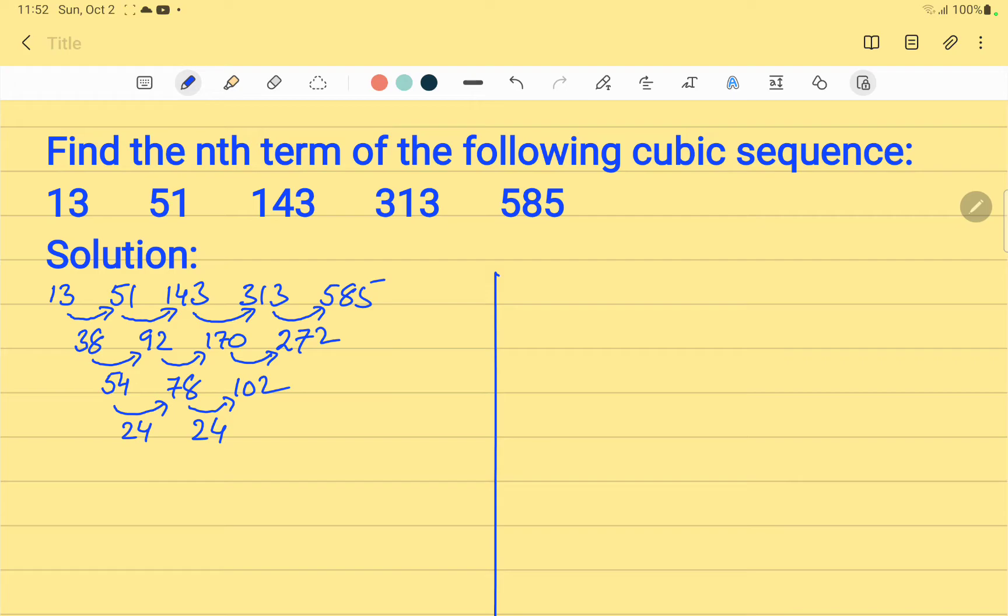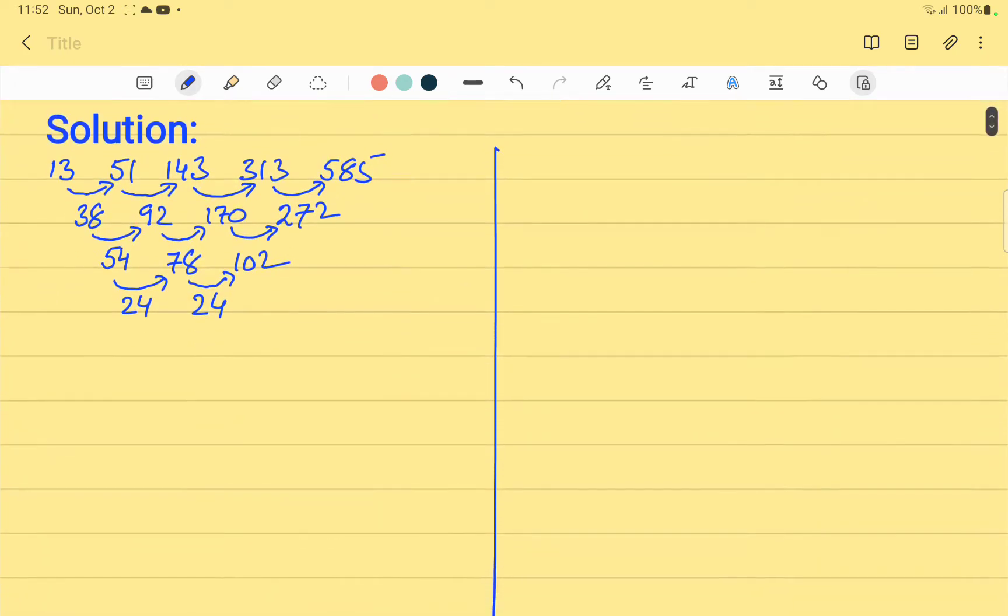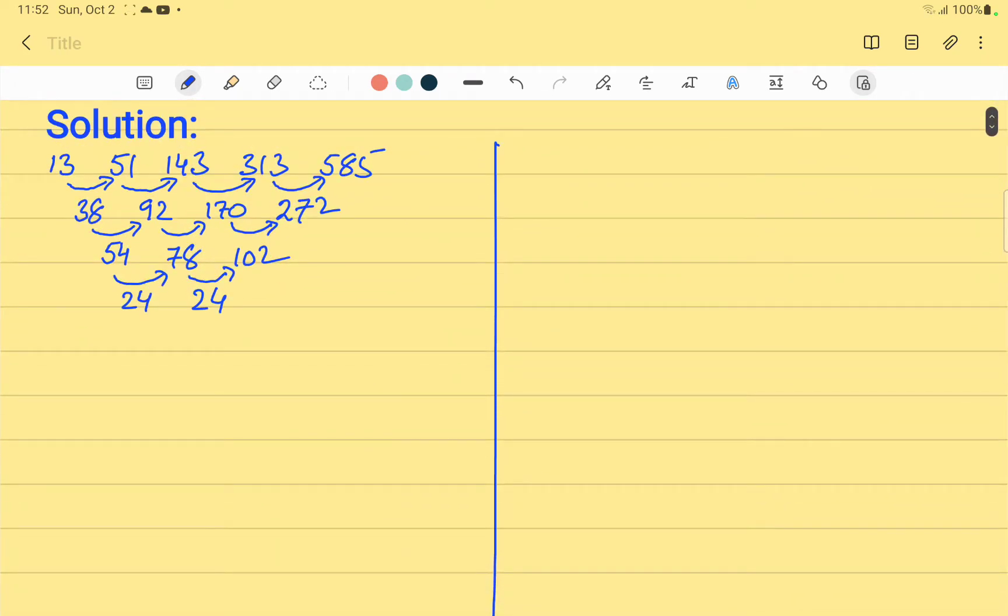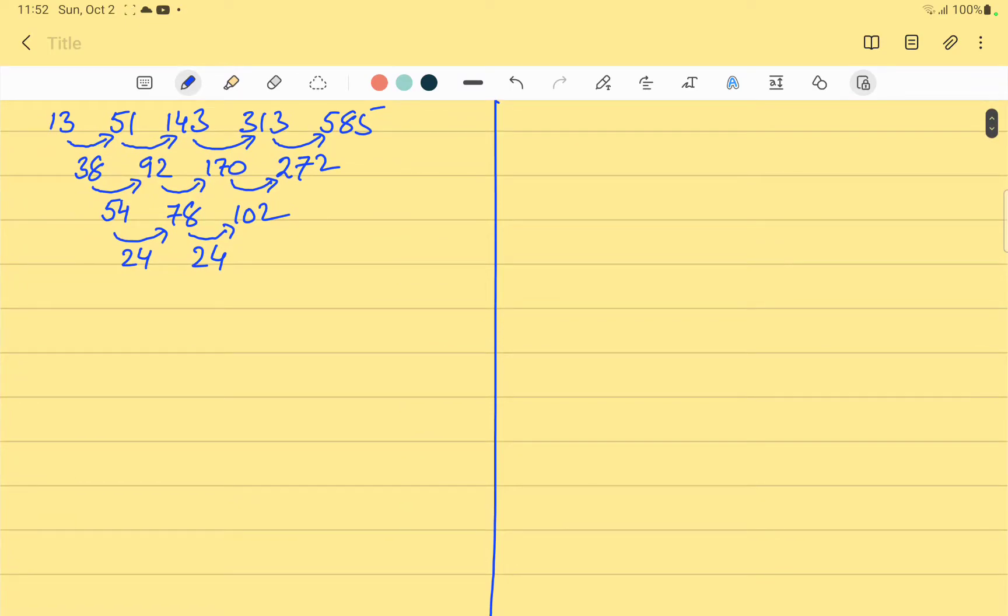This time, the differences are the same, that is 24. So we divide it by 6 and write it with n cube. That is 4n cube.